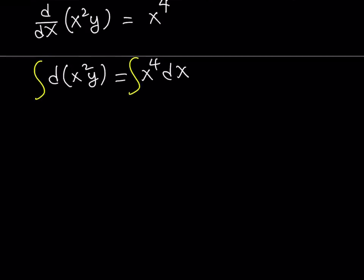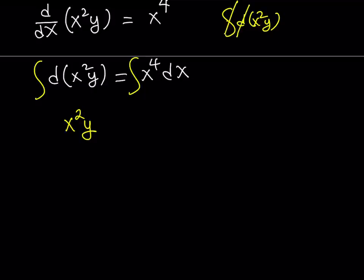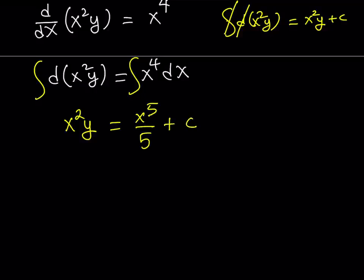As you know from the rules of integration, when you have the integral of d of something, it equals that same function. So the left-hand side just gives us x squared y — loosely speaking, the integral symbol and the d cancel each other out. We only need one constant, since a constant minus a constant is another constant. So integrate x to the fourth power, which gives x to the fifth divided by five, plus constant c.